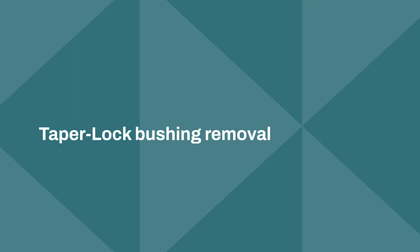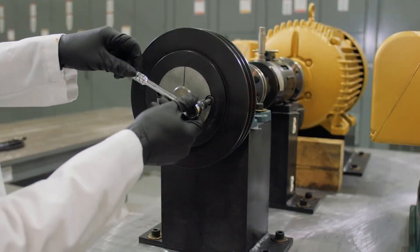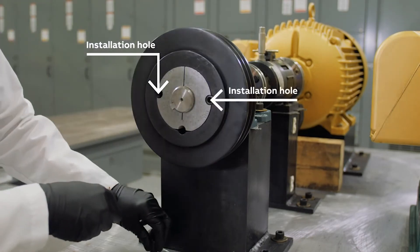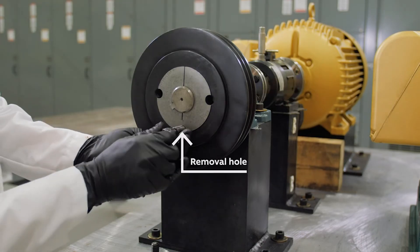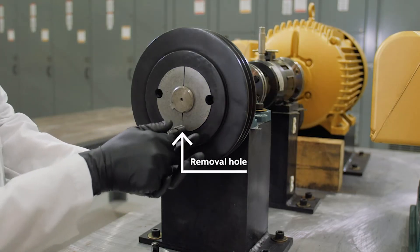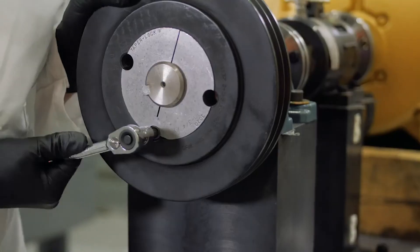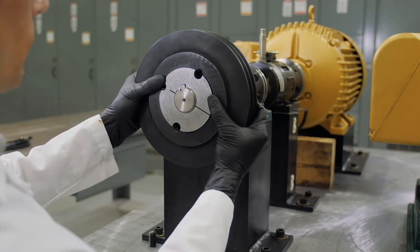Removal of taper lock bushings is simple. Remove all set screws and reinstall the set screws into all available removal holes. Removal holes have threaded half holes in the bushing with non-threaded half holes in the hub. Tighten all set screws alternately and evenly until the bushing is released.